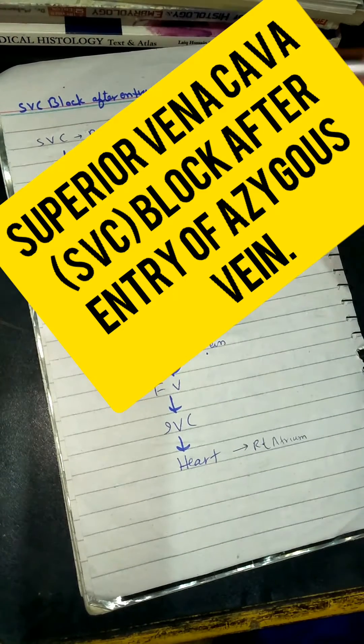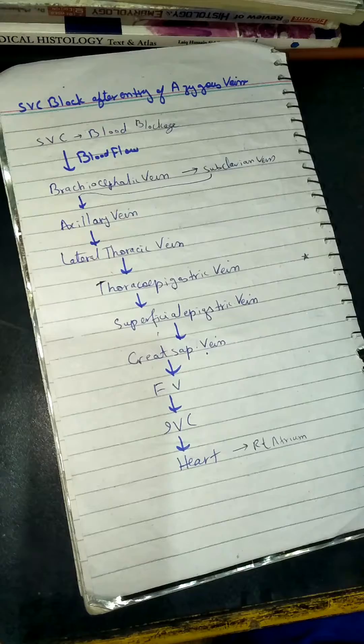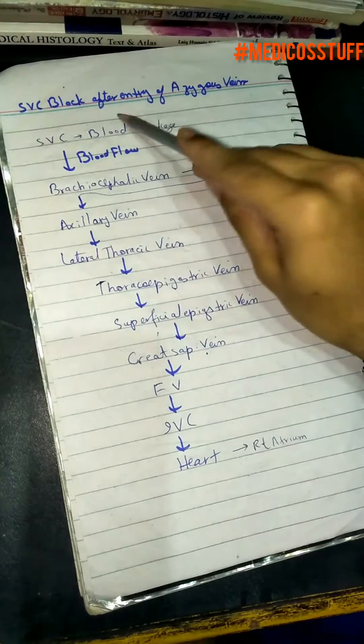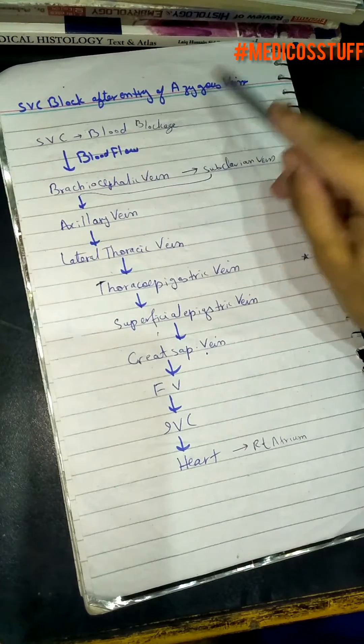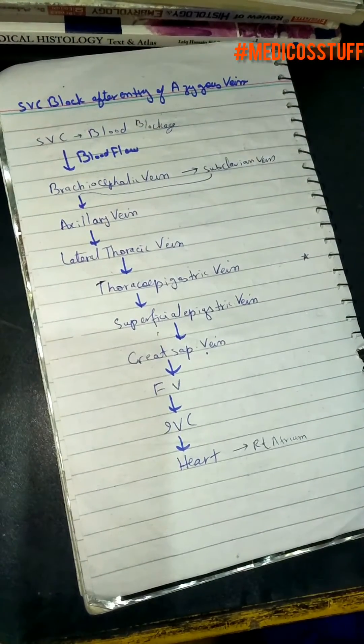Today our topic is the Superior Vena Cava (SVC) block. We will study two scenarios: after the entry of the azygos vein and before the entry of the azygos vein, and what happens to blood flow in each case.